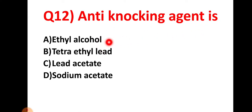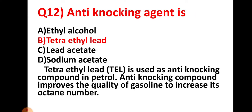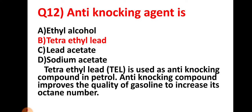Question number twelve: which one is an anti-knocking agent — option A: ethyl alcohol, option B: tetraethyl lead (TEL), option C: lead acetate, option D: sodium acetate. The right answer is tetraethyl lead (TEL), which is used as an anti-knocking compound in petrol. Anti-knocking compounds improve the quality of gasoline by increasing its octane number.